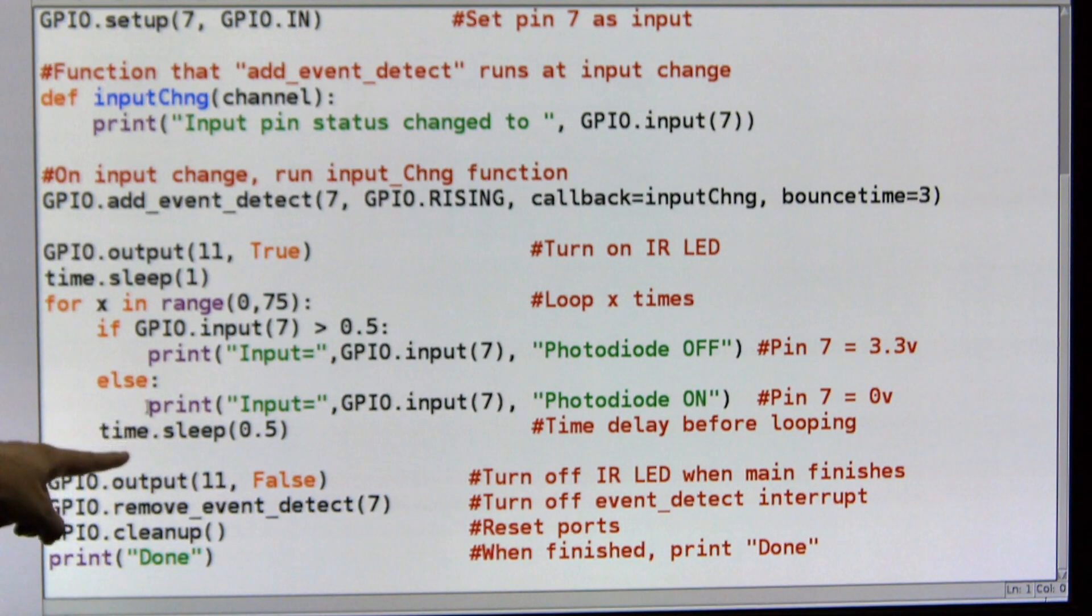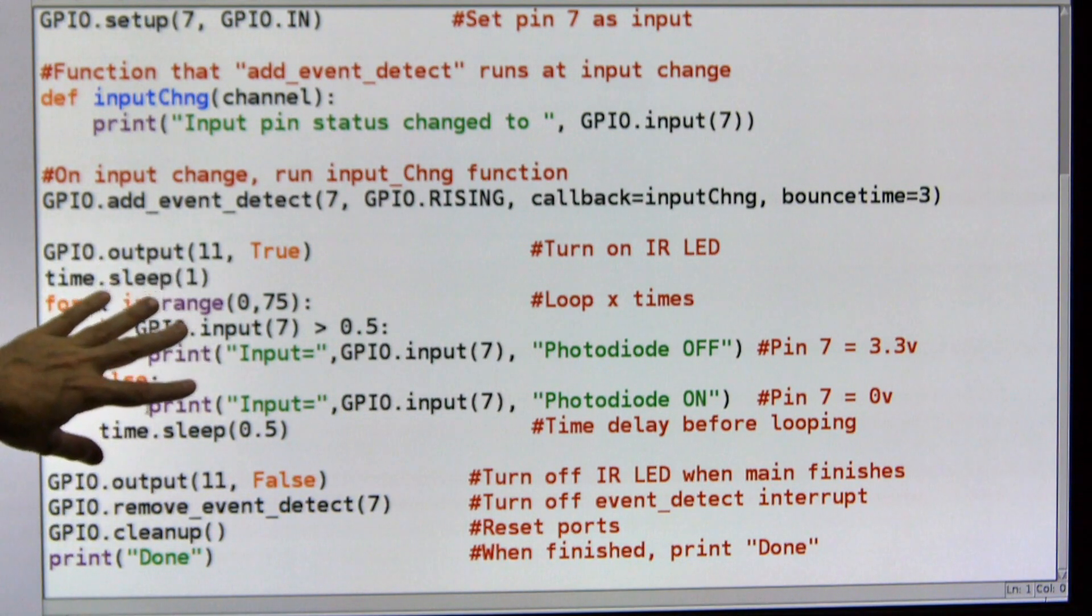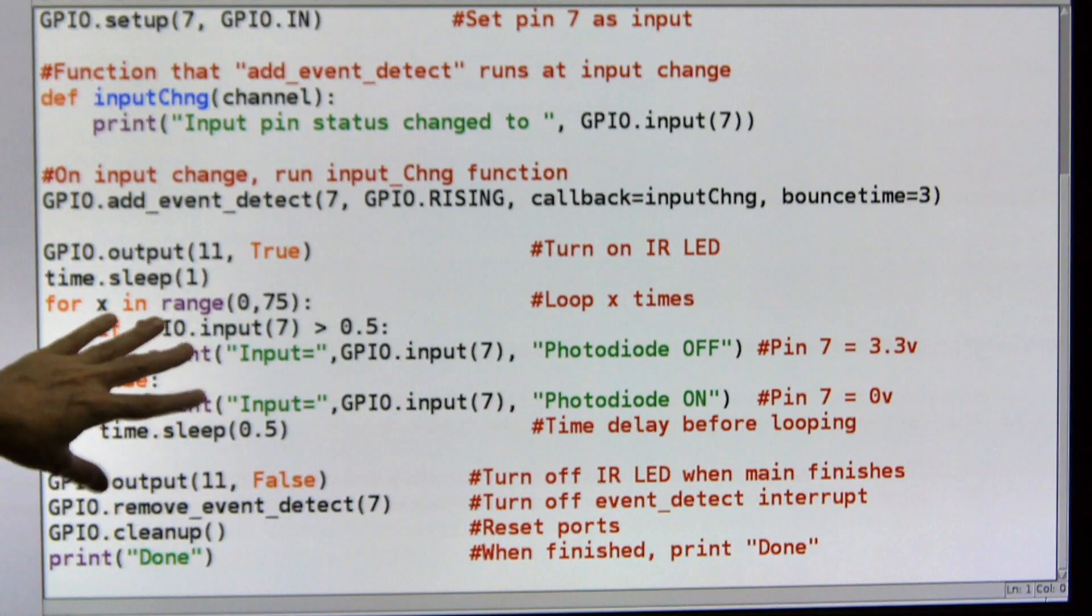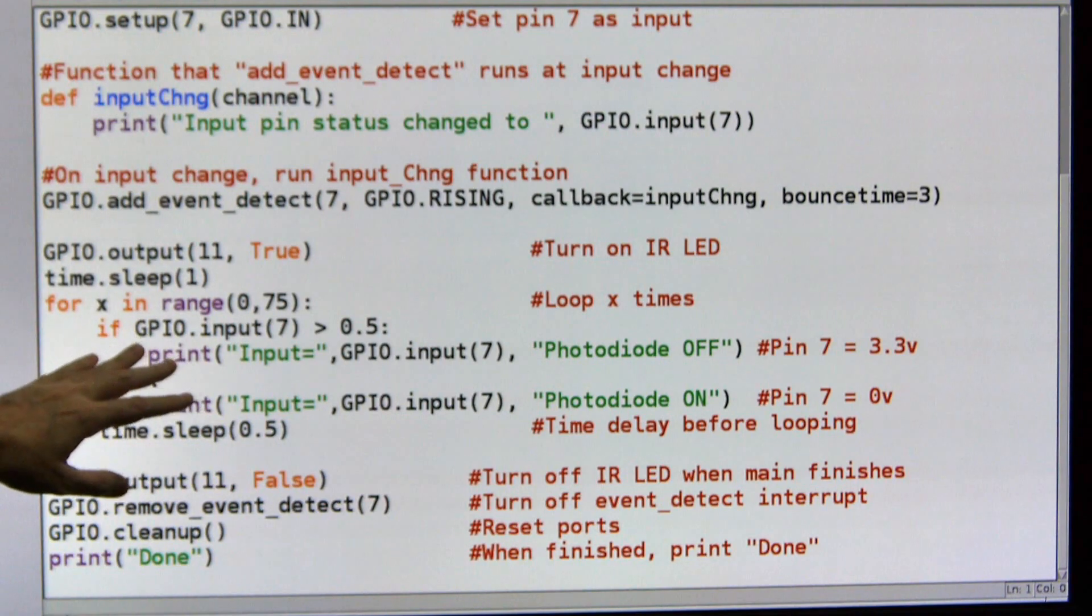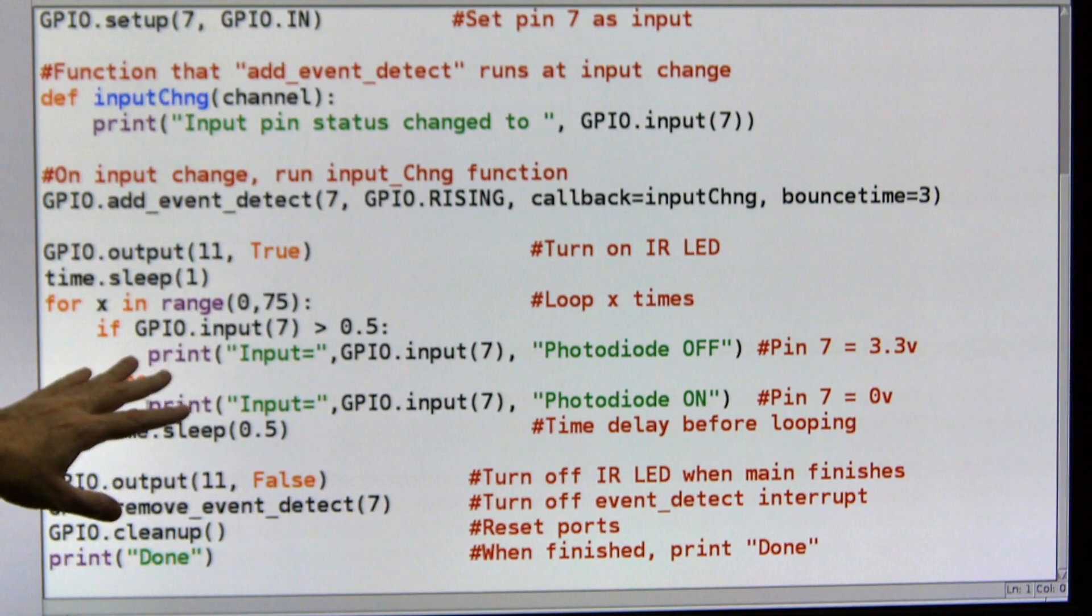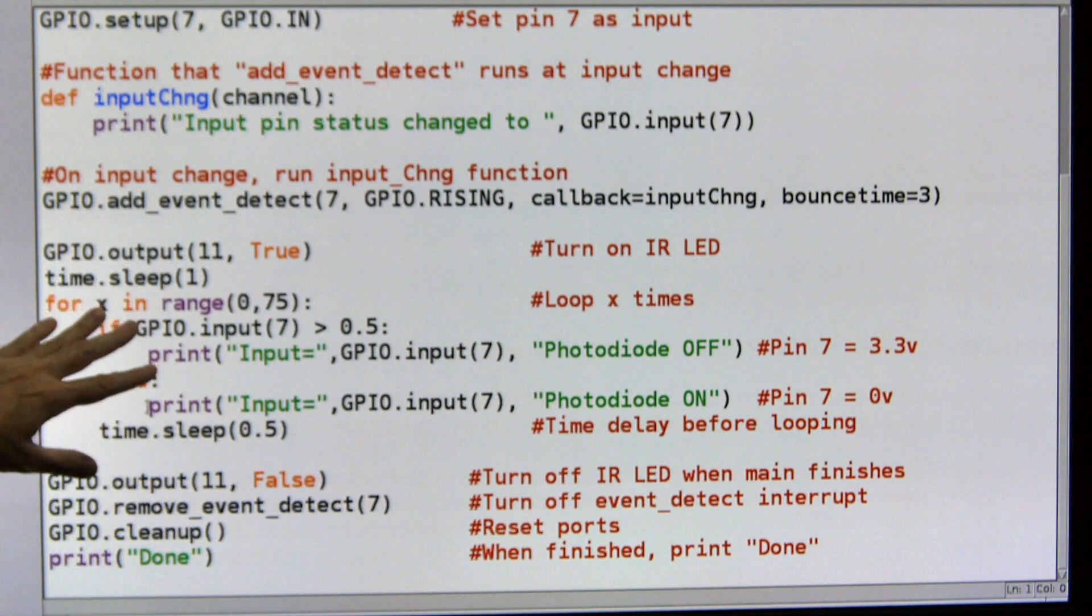And again, the program is off doing this thing until pin 7 changes. It will come up here, it will execute this, and then it will come right back and do it. So the whole computer is not wasted just monitoring pin 7. And that's the important part of an interrupt.